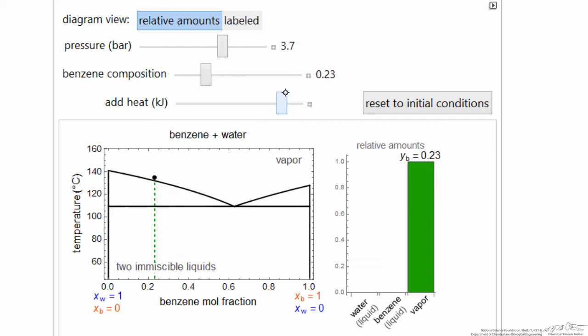And eventually I'll get to the point where I've evaporated all the water, and now I just have my overall original composition. Everything is in the vapor phase. And so you can use, at different points in the diagram, you can add heat for a given composition to get a better idea of the behavior of the system.